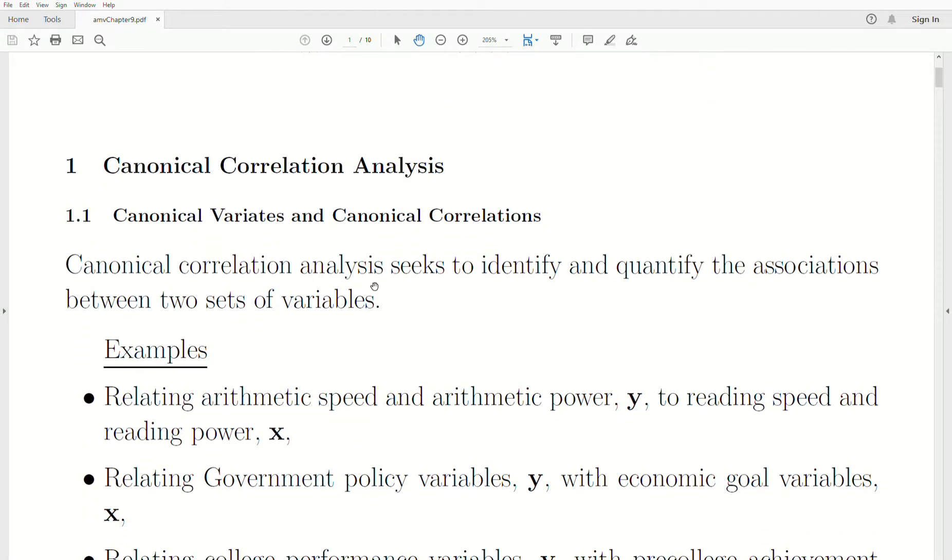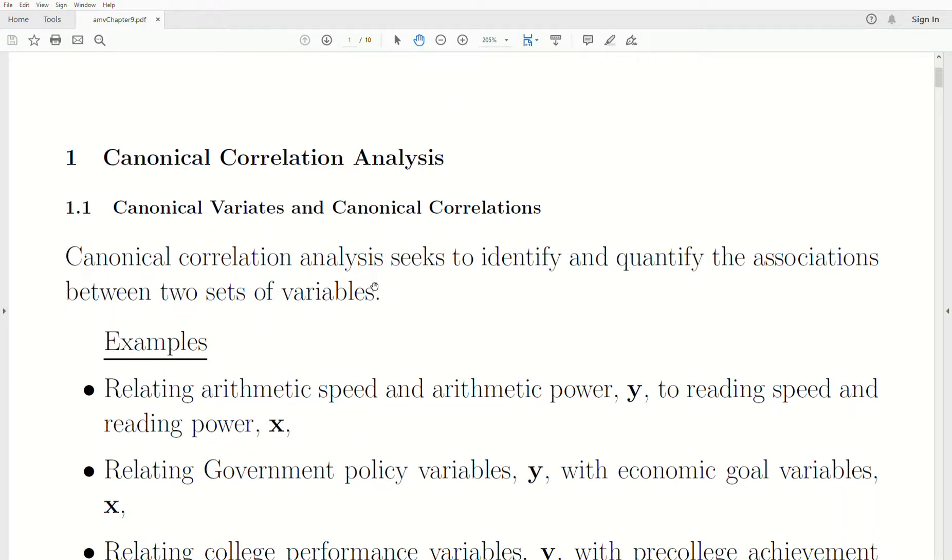But first, what is canonical correlation? Canonical correlation analysis seeks to identify and quantify the associations between two sets of variables. And sets is one or more, two or more variables.